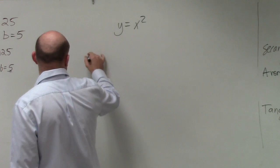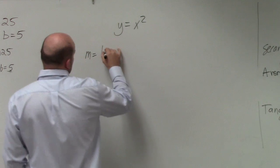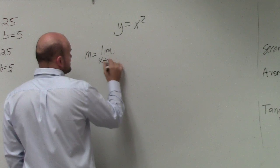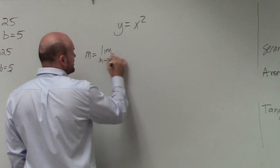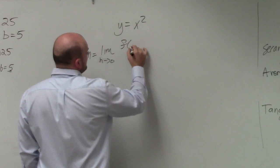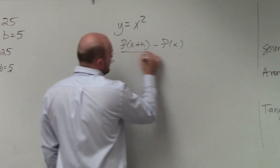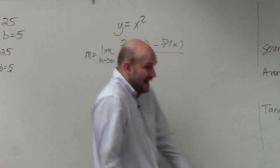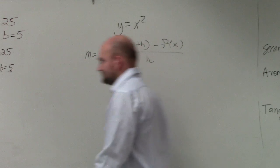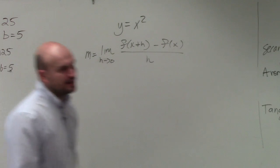As we talked about, m equals the limit as h approaches 0 of f(x+h) minus f(x) all over h. That is the formula we're working on.